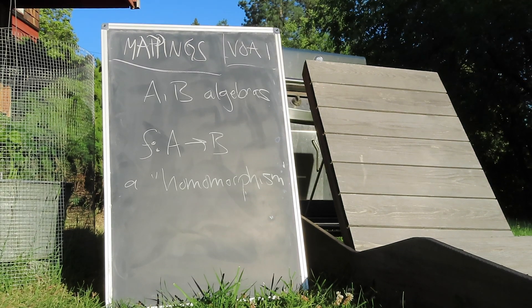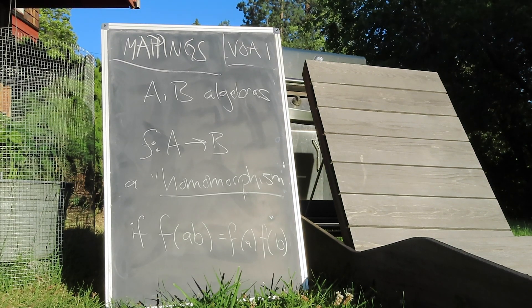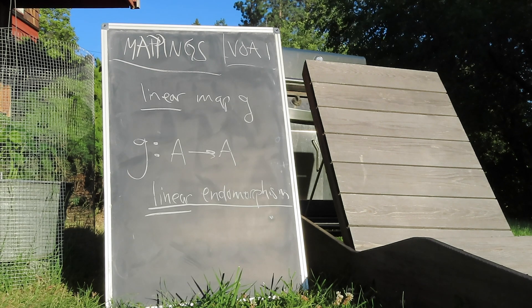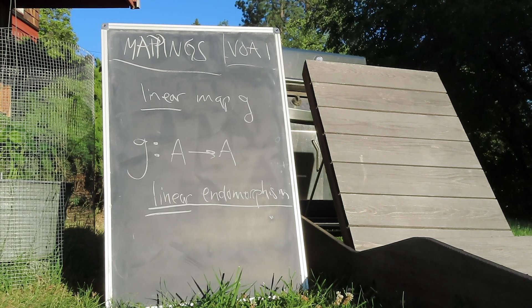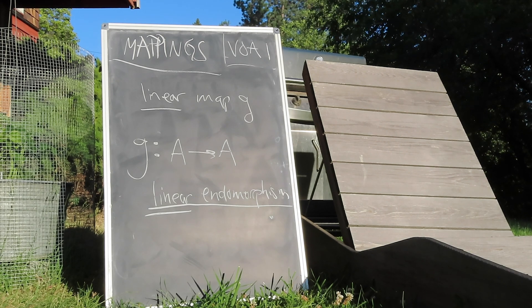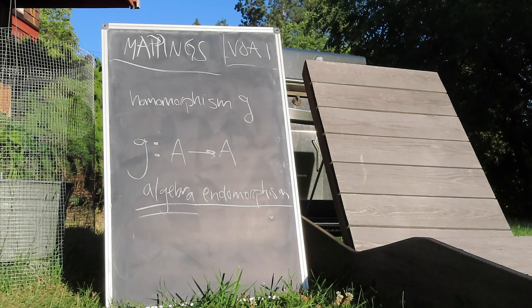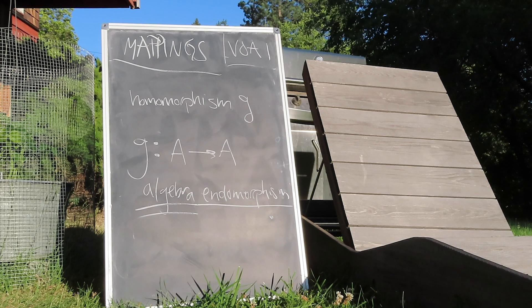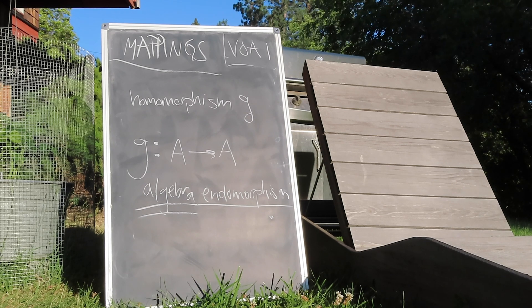A linear map between two algebras is an algebra homomorphism if it preserves the vector product. A linear endomorphism takes a vector space back to itself. We'll be dealing a lot with endomorphisms, and we'll need to distinguish between linear and algebra endomorphisms. And in the context of algebras, both kinds are vital to our discussions.